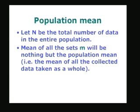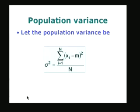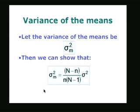So I am just repeating what I said earlier. We have N, the total number of data in the entire population, and the mean of all the sets — which I call M without any subscript — will be nothing but the population mean. That is, the mean of all collected data taken as a whole will actually equal the population mean. That is observation number one. The second observation is if you look at the variance of the population, I can define it using the definition from our earlier lecture: σ² = (1/N) Σᵢ₌₁ᴺ (Xᵢ − M)².